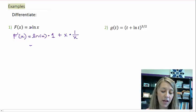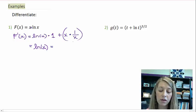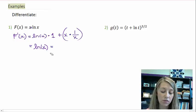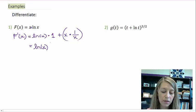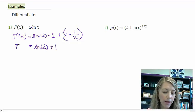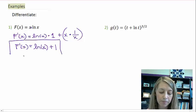Simplifying: 1 times natural log of x is just natural log of x. And over here, x divided by itself cancels out, so that leaves me with a plus 1. So my derivative is natural log of x plus 1.